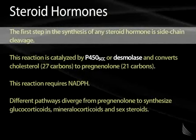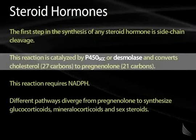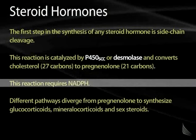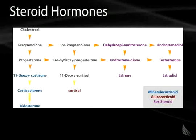The first step in the synthesis of any steroid hormone is side chain cleavage, catalyzed by desmolase, or P450 side chain cleavage (P450scc). This enzyme removes the long side chain from cholesterol's rings, converting the 27-carbon cholesterol to the 21-carbon pregnenolone. This reaction requires NADPH. From pregnenolone, different pathways diverge to synthesize glucocorticoids, mineralocorticoids, and sex steroids.